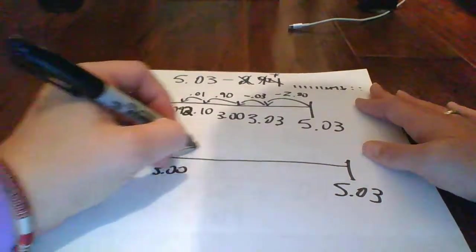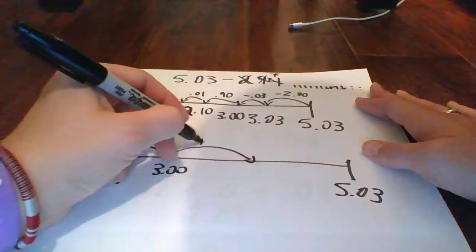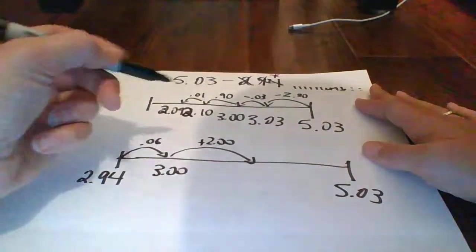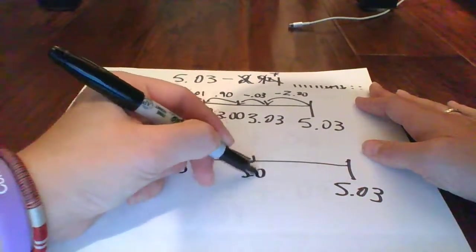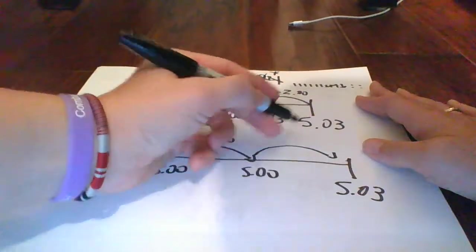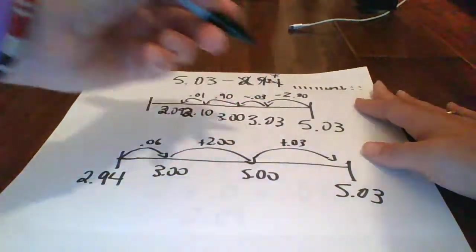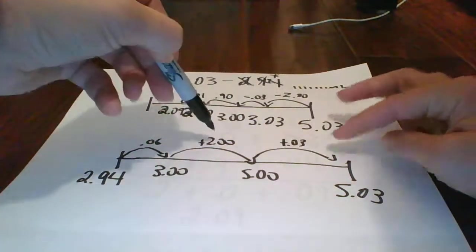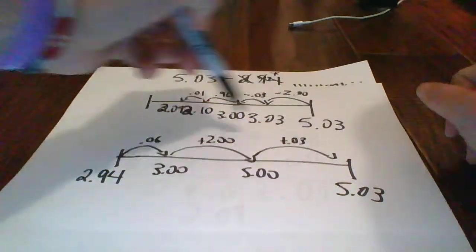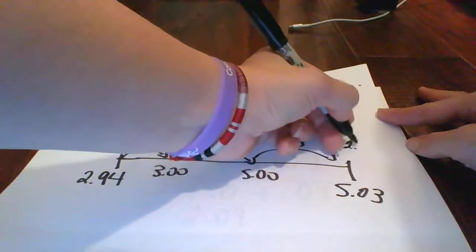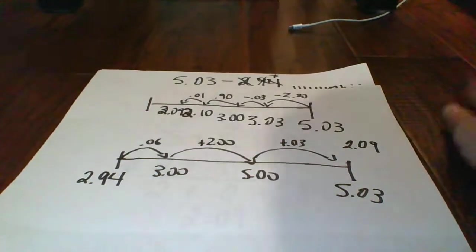And then I need to get to 5 dollars. So that's an easy jump. So plus 2 dollars gets me to 5 dollars. And then I just have to add the 3 cents, plus 3 cents. And so my answer is 2 dollars plus 6 cents plus 3 cents, which is 2 dollars and 9 cents.